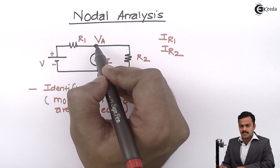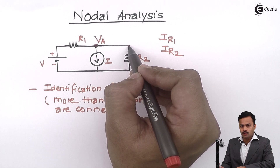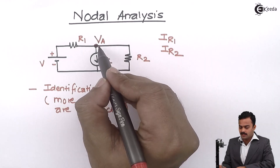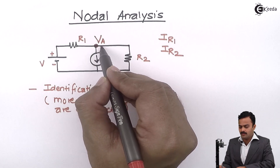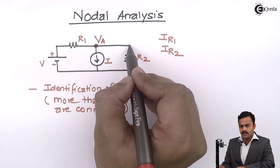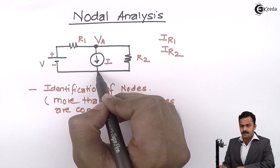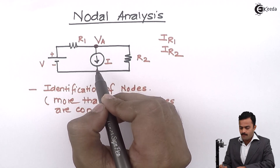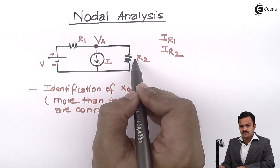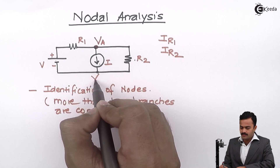I will name the potential of this node as VA. A point where only two branches meet cannot be a node. Also, a segment that is just a wire with no element present is not a branch. So at this point I have only one branch R2, and at the next point I have one, two, three branches connected — so this is also a significant node, which I will call VB.